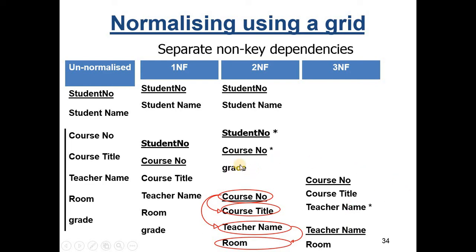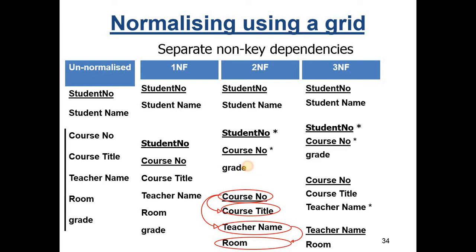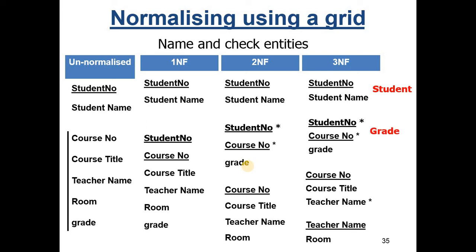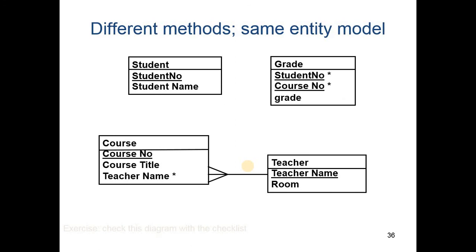The remaining structures don't change — there is only one non-key attribute in each, so no opportunity for further non-key dependencies. We now have four separate tables: students, grade (the junction), course, and teacher — the same tables as before. The entity model shows: teacher is related to course with teacher name as the foreign key; each student gets multiple grades with student number repeated as a foreign key; each course has multiple student grades with course number as the foreign key at the many end.